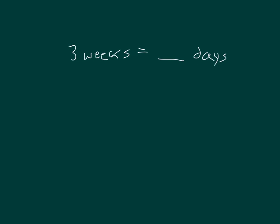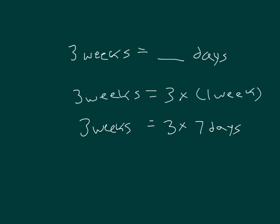Three weeks equals blank days. It will help us to know that three weeks equals three times one week. Then we can replace one week with seven days because we know that one week does equal seven days. So three weeks now equals three times seven days. Three times seven is 21, so we have three weeks equaling 21 days.